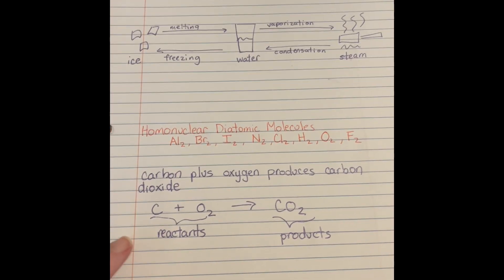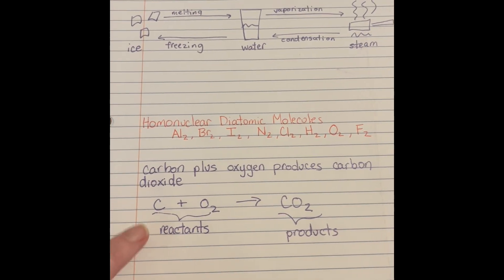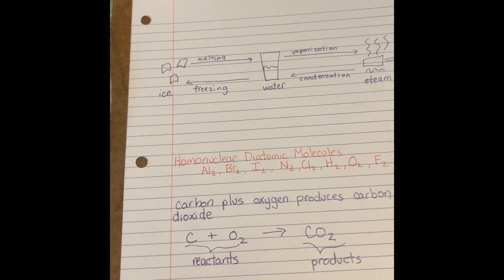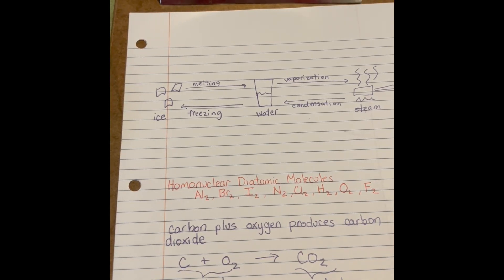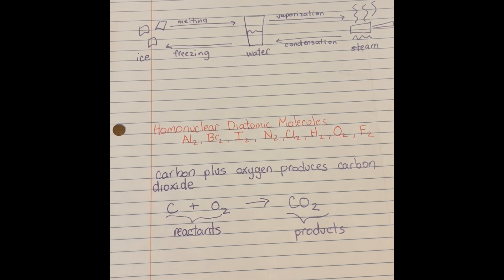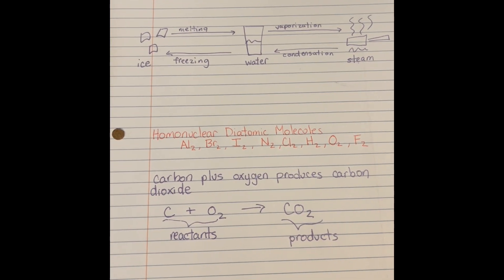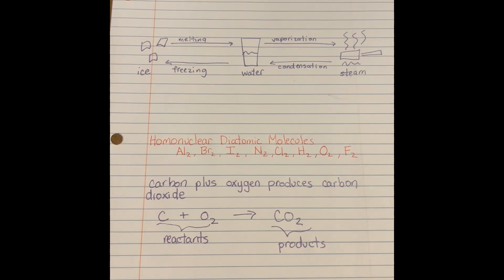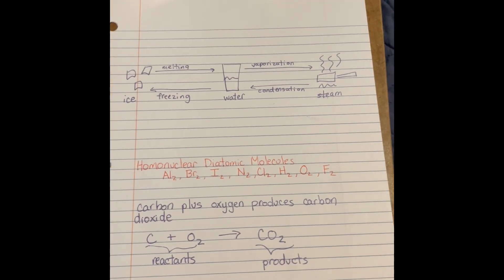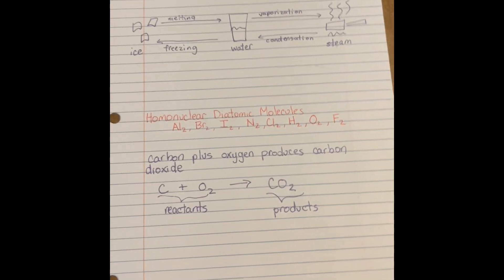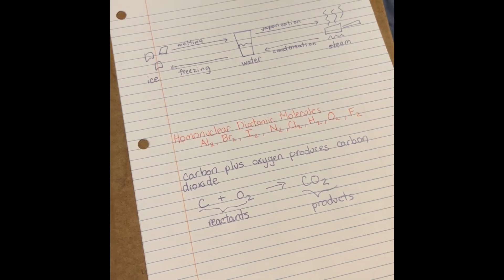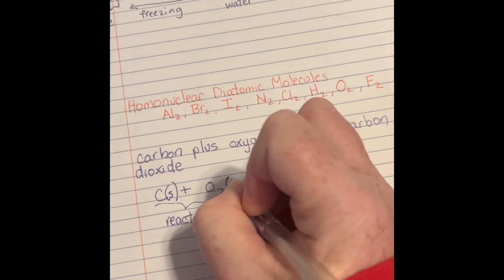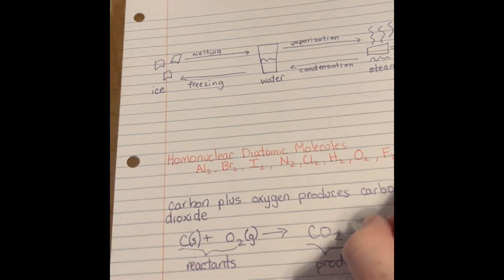Your reactants are the materials that will react together in your reaction, and they're on the left of the equation. Your products are on the right of the equation. In a chemical reaction, molecules break apart into individual atoms, and then the atoms rearrange or recombine to make new molecules. You can also include information about the phase of the material. Carbon is a solid when it's coal, oxygen is a gas, and carbon dioxide is a gas.